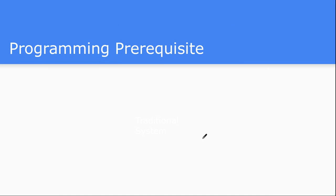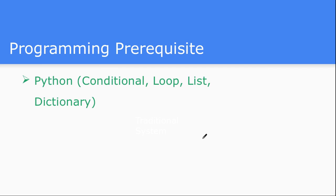For programming prerequisites, we are going to program in Python. Just for reference, conditional statements, loop statements, lists, dictionaries, and basic Python-level data structures are sufficient to get started with Python programming. There are other languages like R and Java, but in this video lecture series we are going to stick with Python.